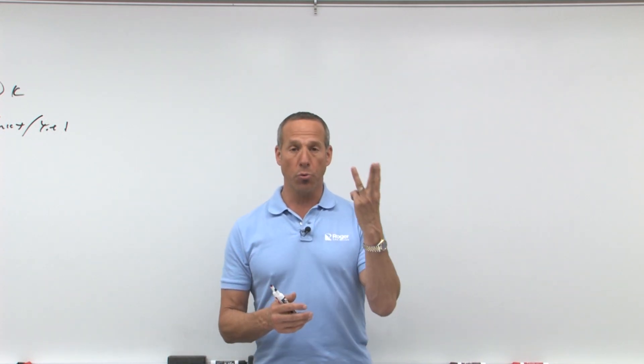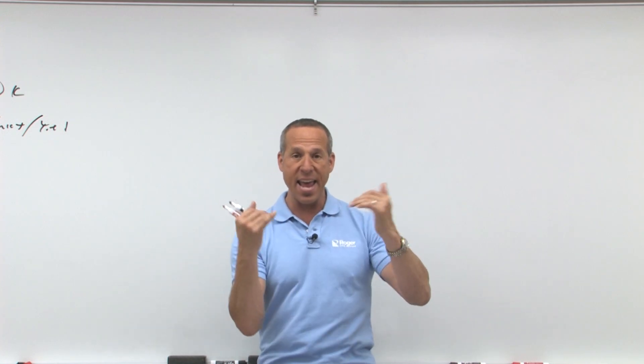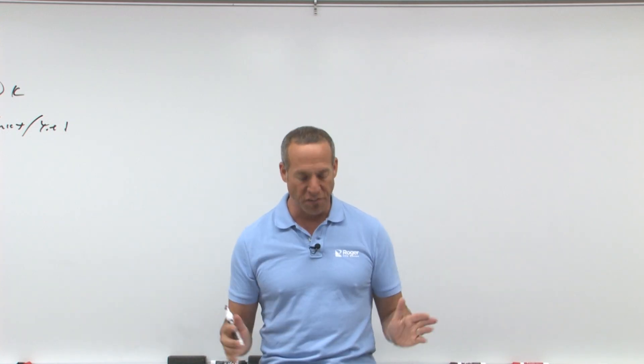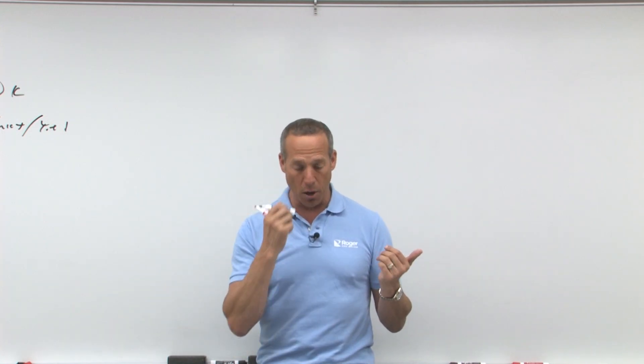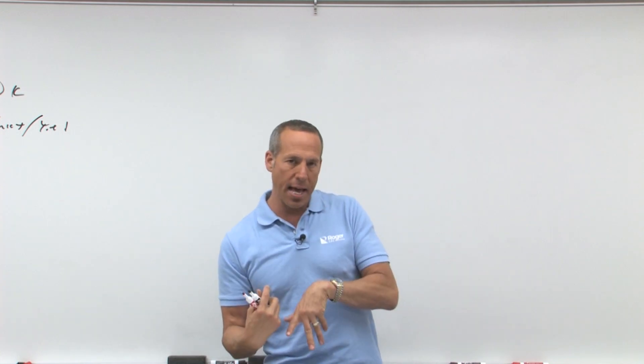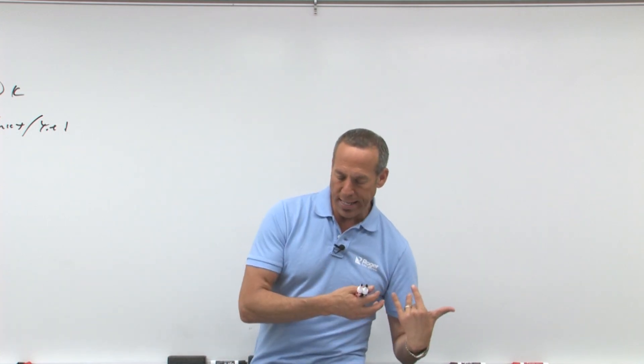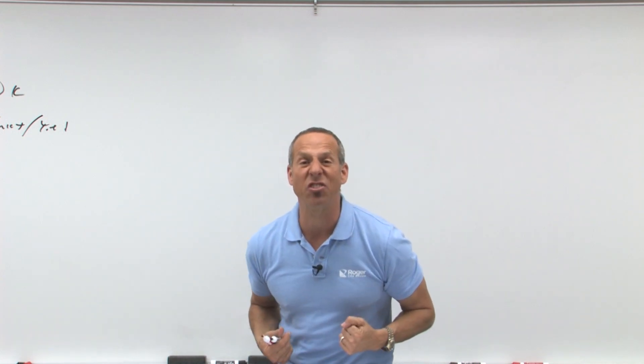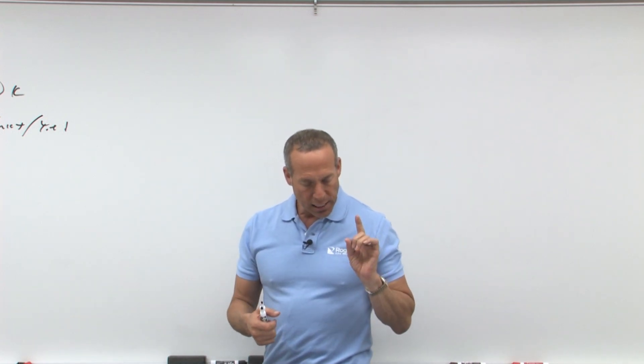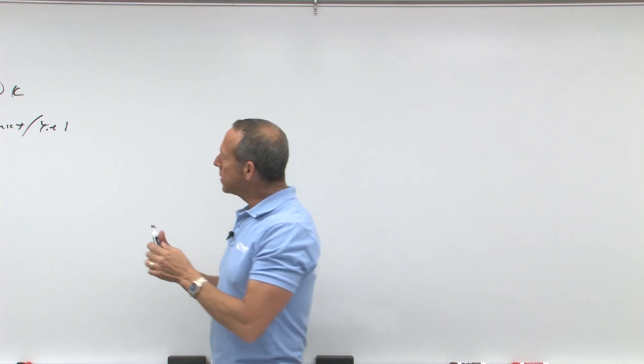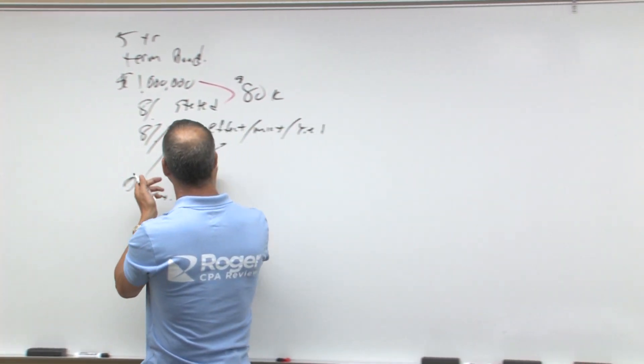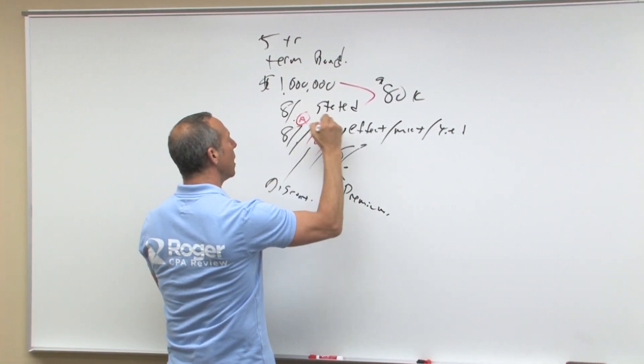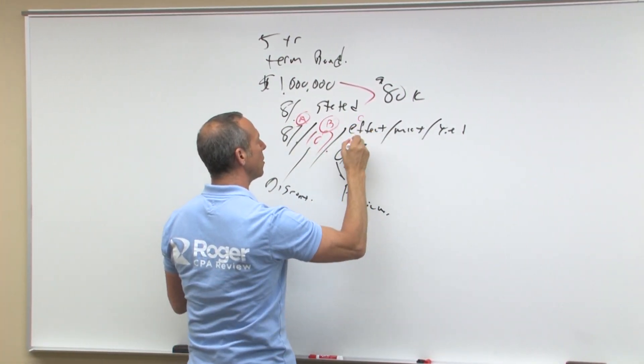Notice we're going to be doing three examples. One is 8-8, which is issued at par or face value. We don't have to worry about discount or premium. Then we'll go to a discount example, then a premium example, and then life will be beautiful for you. Things will make sense. So we've got 8, 10, and 6. Let's do that. This is going to be example A, B, and C.